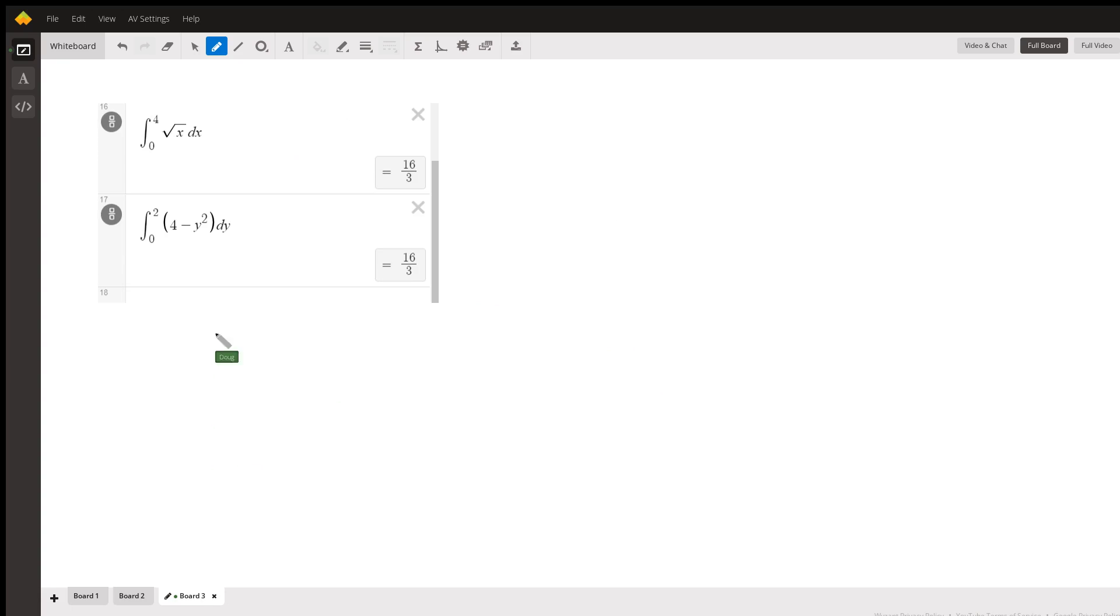And here's proof that they do. From 0 to 4 of the square root of x dx gives 16/3. And from 0 to 2 of 4 minus y squared dy also gives 16/3.